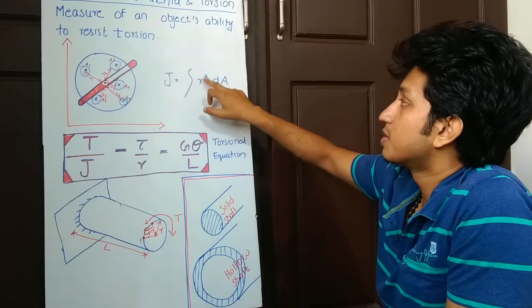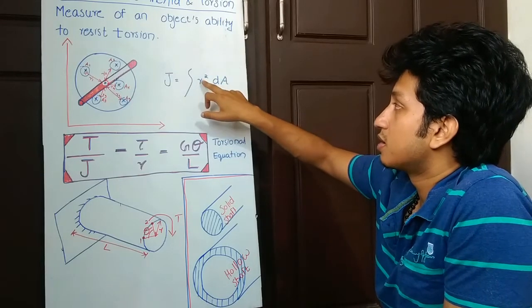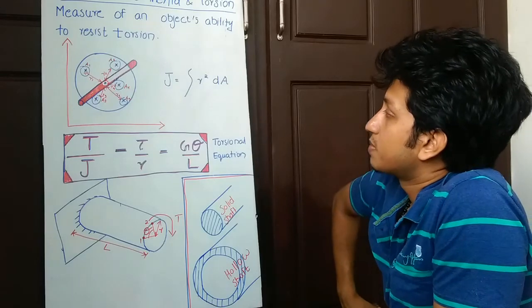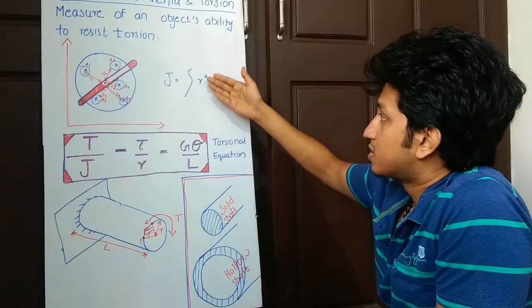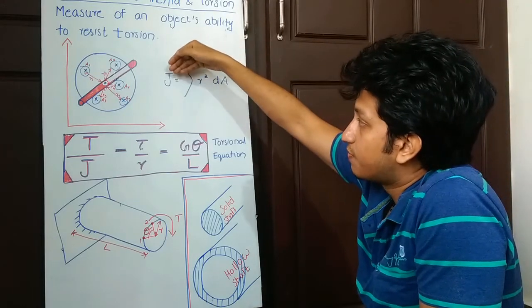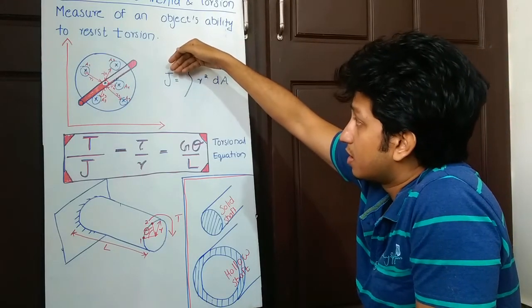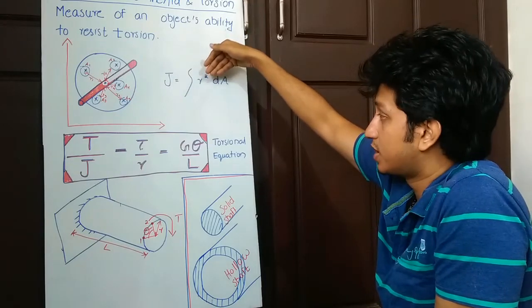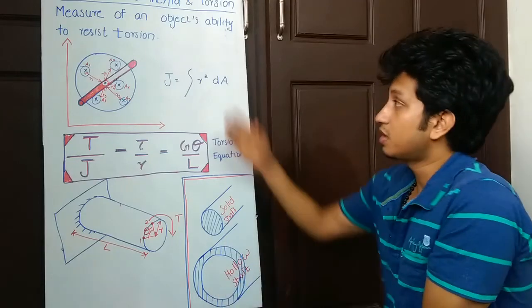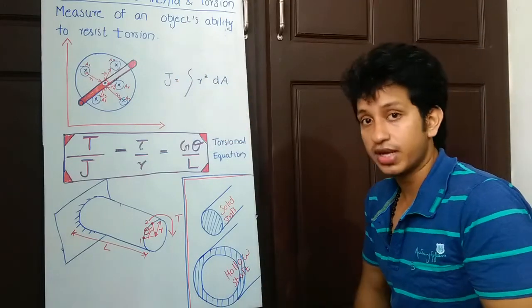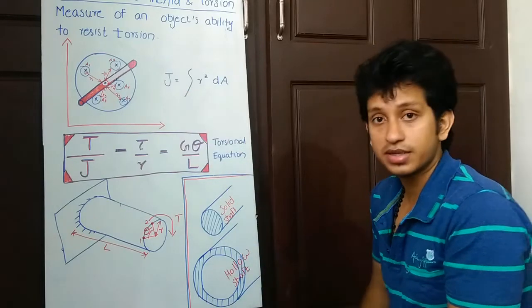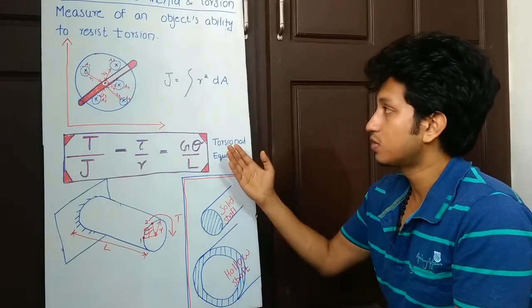After we integrate, it becomes r cubed. What I'm trying to tell is that it's getting more than r squared, so if J is proportional to a high degree of radius, as the radius increases its effect on J would be very high. If you increase the radius, J would increase definitely, and you can see...